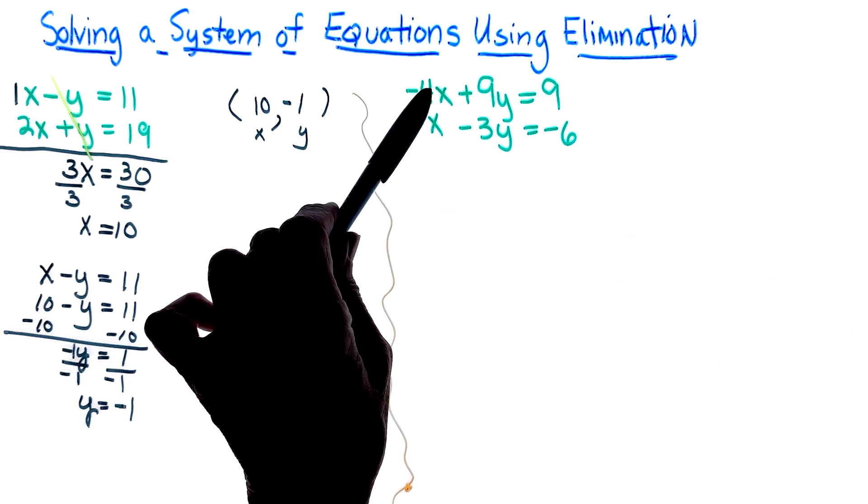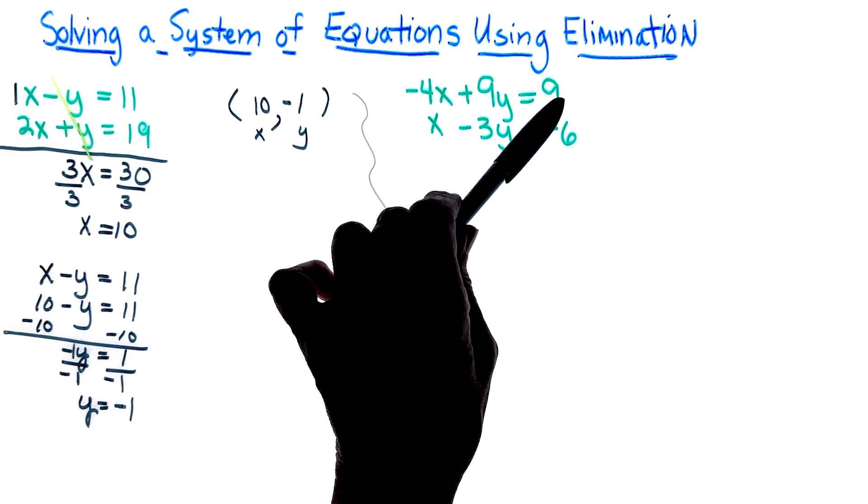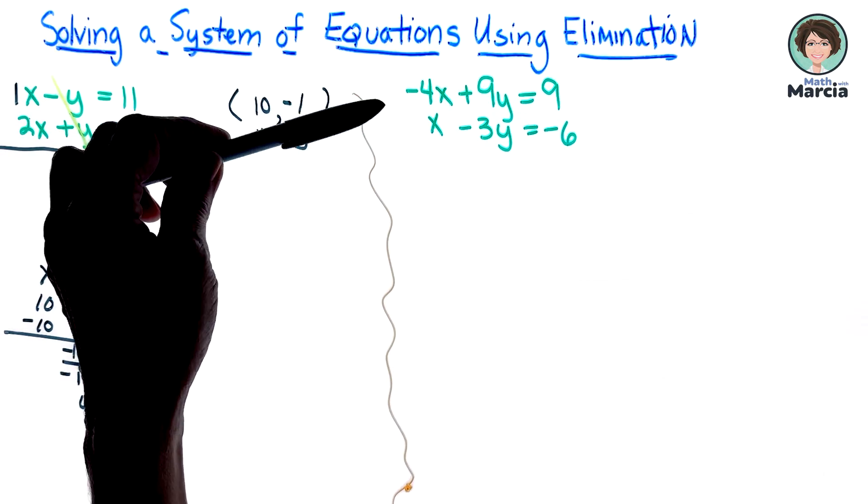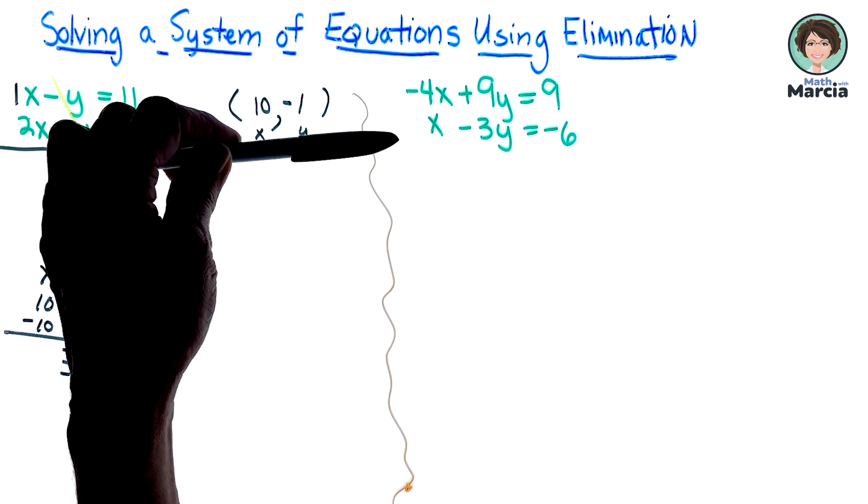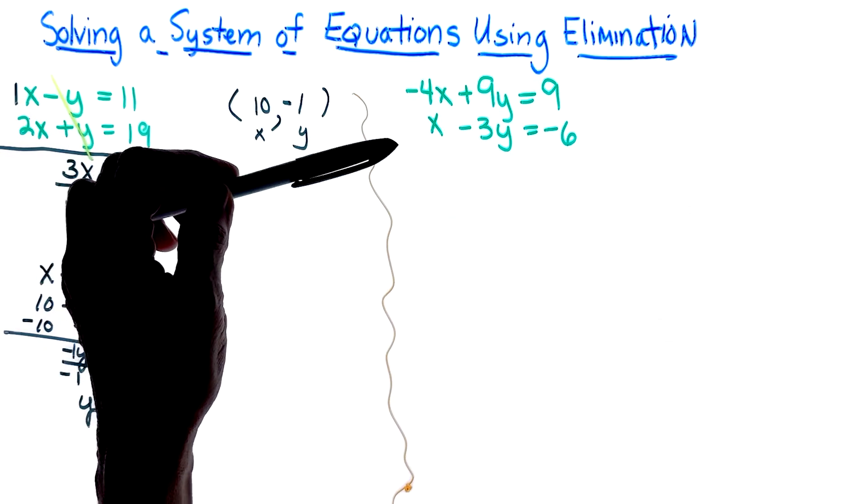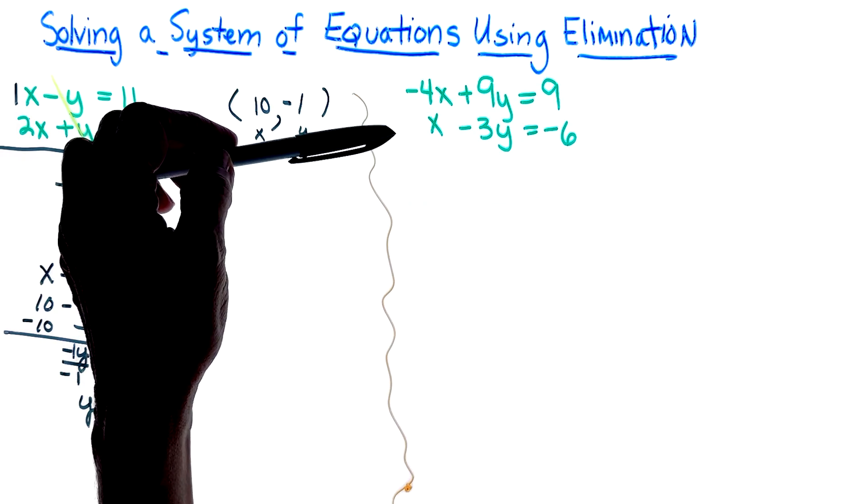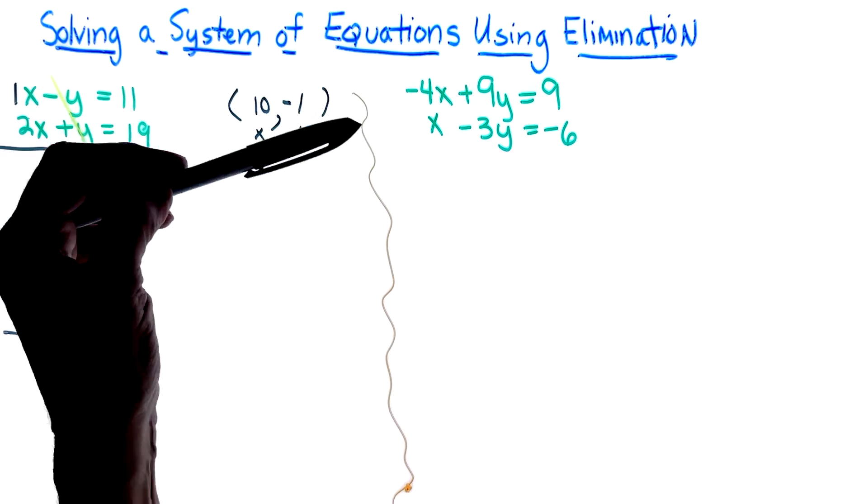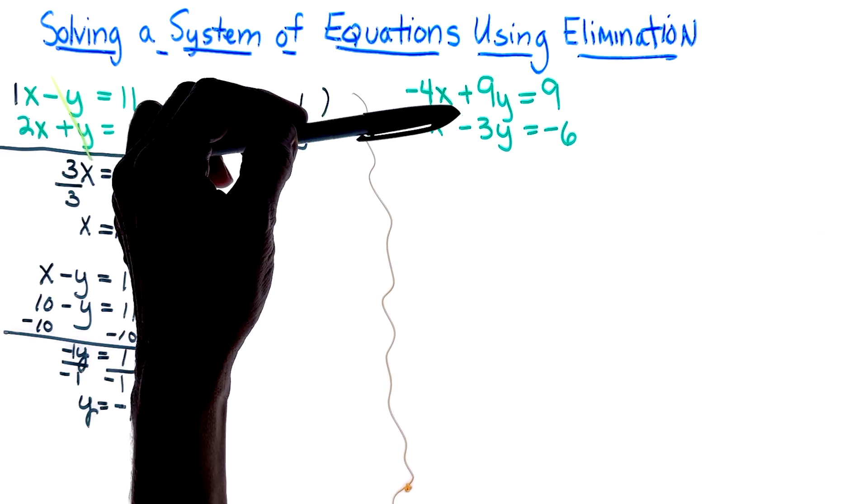So I need to get a pair of opposites. It can be the x or it could be the y. If I multiply, and that's what we do when we need to end up getting a pair of opposites here.